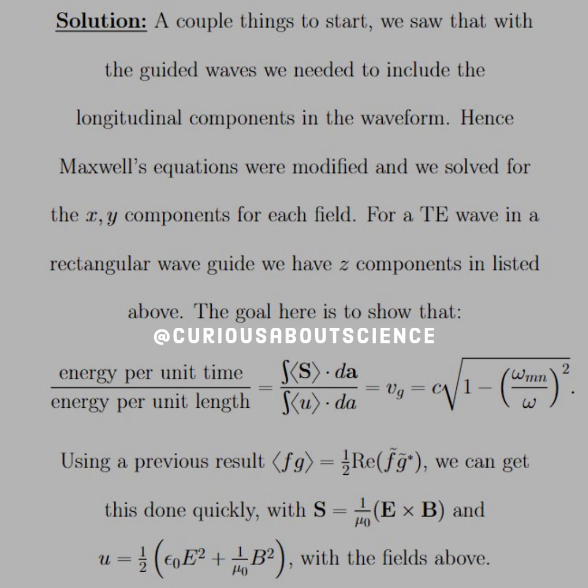And U equal one half epsilon E squared plus one over mu not B squared with the fields above. Everything that we listed in the know will be utilized.